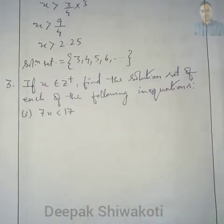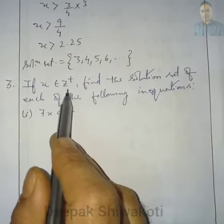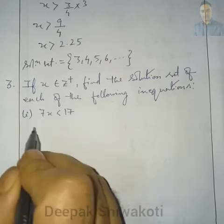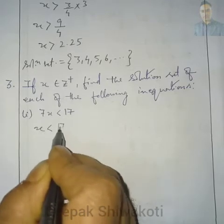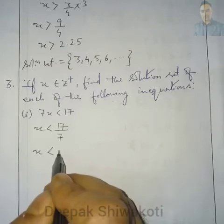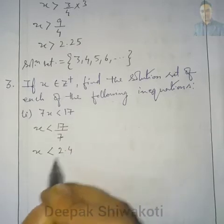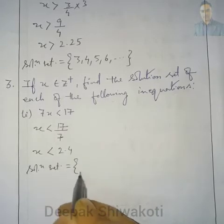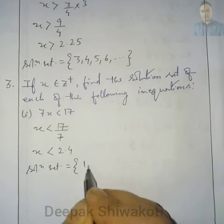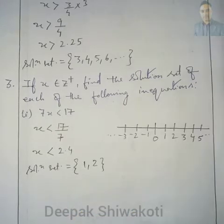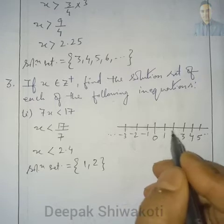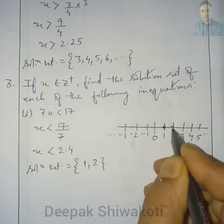Number 3: where x belongs to Z+ (positive integers), find the solution set. Question 1: 7x < 17. Dividing both sides by 7: x < 17/7, which equals approximately 2.4. So x < 2.4. From positive integers, the solution set is {1, 2}. On the number line, we mark 1 and 2.